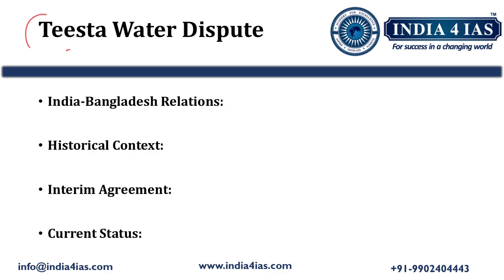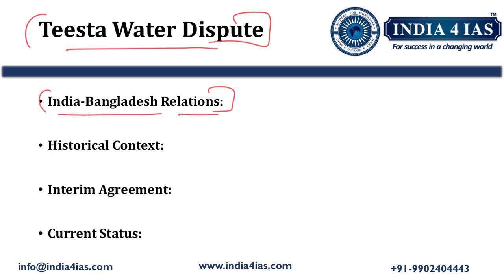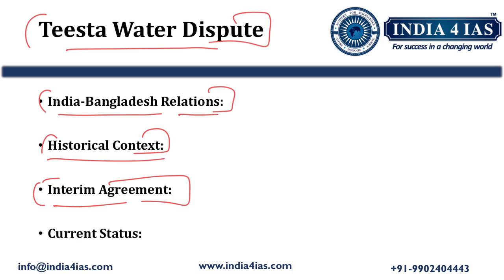The Teesta River water dispute is between India and Bangladesh. The river has been a contentious issue due to water sharing disputes. During the British period, the Teesta water was primarily used for irrigation in the Bengal region. After the partition, water sharing issues arose between India and then East Pakistan, the present Bangladesh. In the year 1983, an ad hoc agreement allocated 39% of the Teesta water to India and 36% to Bangladesh, but a final agreement has not been reached yet.